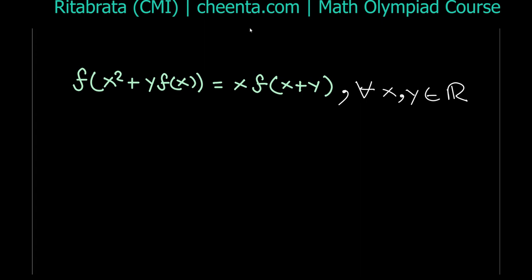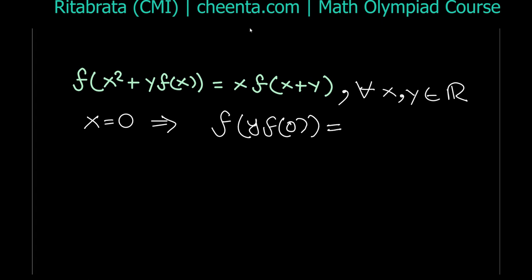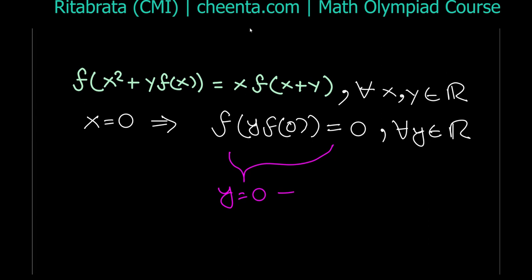Let's substitute x = 0. What do we get? We have f(y·f(0)) = 0, and this holds for all real numbers y. Simply putting y = 0 gives f(0) = 0. So f(0) must be 0 — this is an important result.